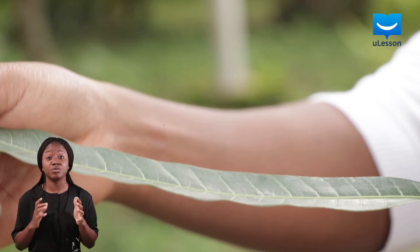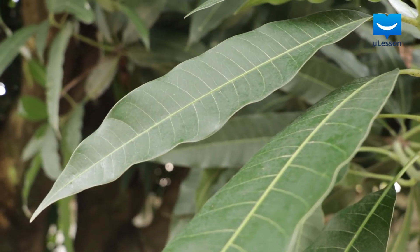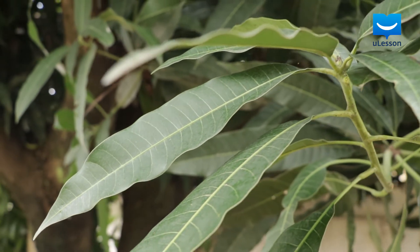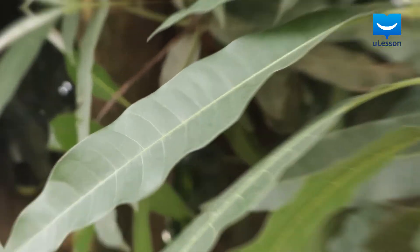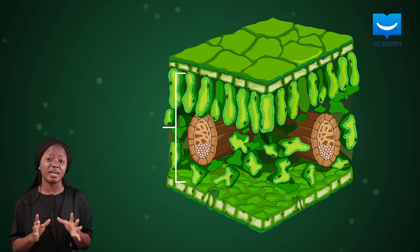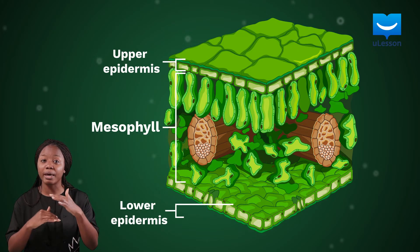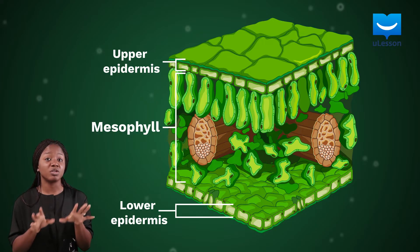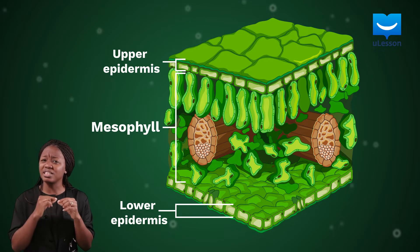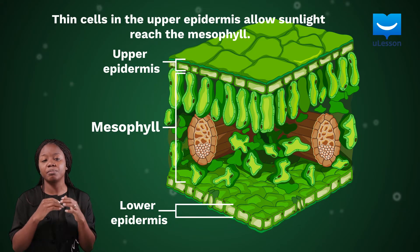Another way that leaves are adapted for photosynthesis is by way of their position. They are placed or arranged on the branches in such a way as to collect as much sunlight as possible. Now let's look closer at the parts of the leaves you and I cannot ordinarily see. The leaf has three layers overall. It has a very important layer called the mesophyll. This layer lies between the upper and the lower epidermis. But before we concentrate on the mesophyll, there are the epidermal cells. These are really thin cells that make up the upper epidermis, and this thinness allows a lot of sunlight to reach the mesophyll.